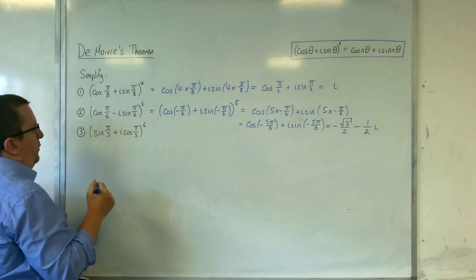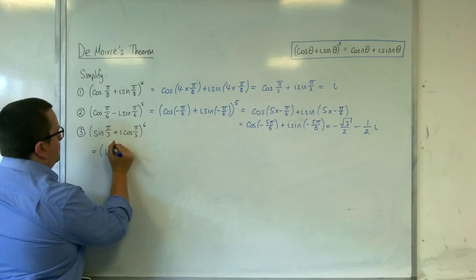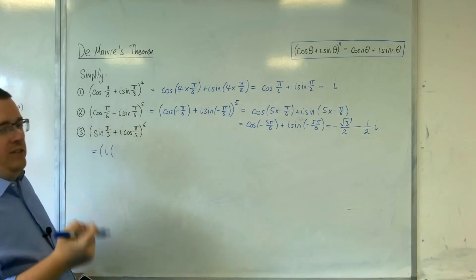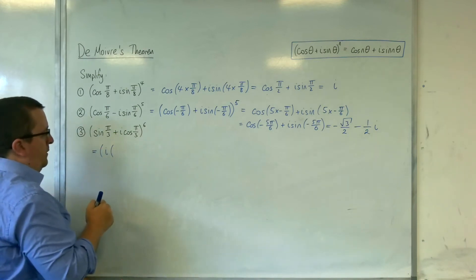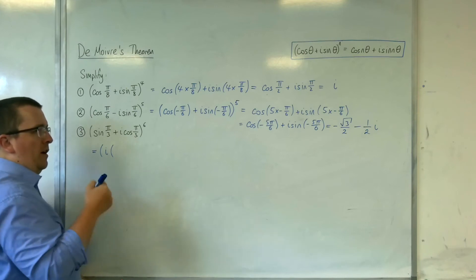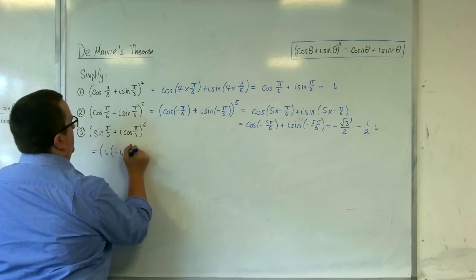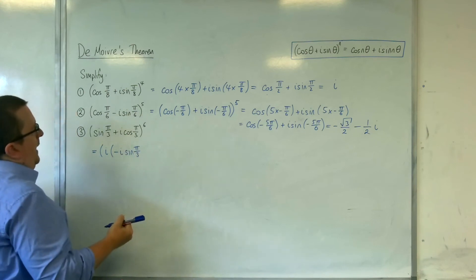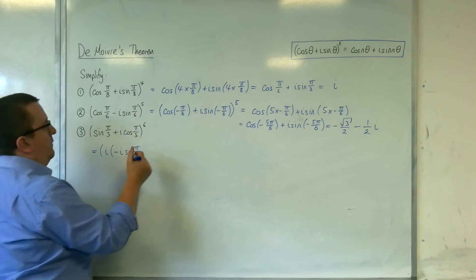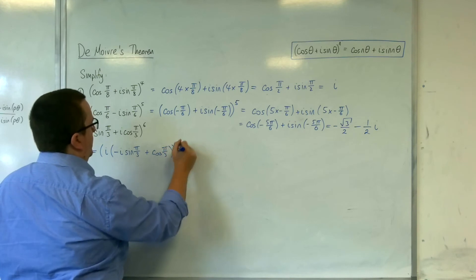Now that seems a little bit of an odd thing to do. So inside the bracket I'm going to factor out i. Now what would I need to multiply the i by to get sine of π over 3? So I know i times i is minus 1. There's no negative there, so I'd have to have minus i sine π over 3. And for this one, if I factor out the i, I've just got plus cosine of π over 3 to the 6.